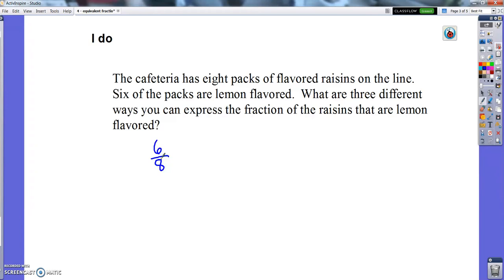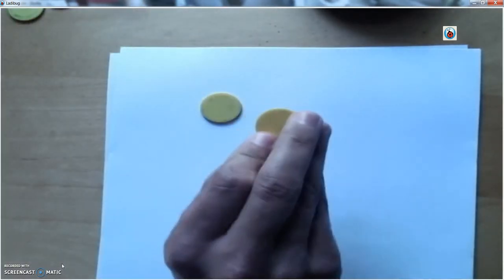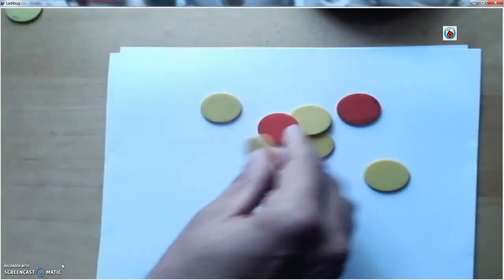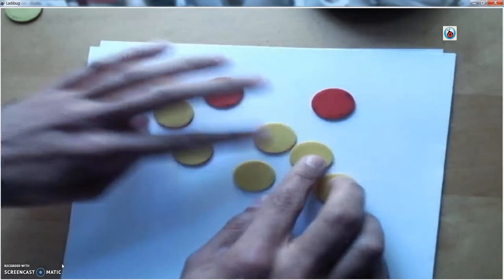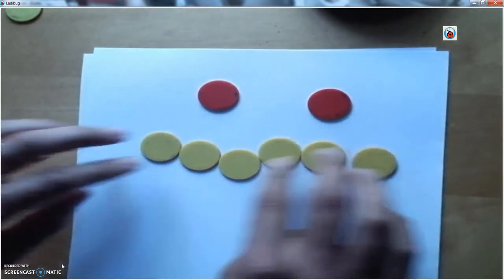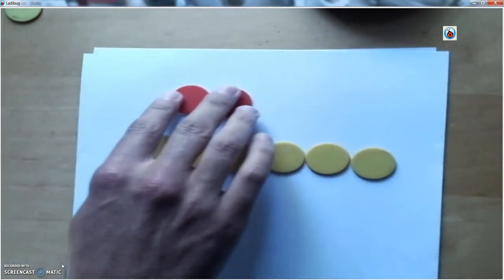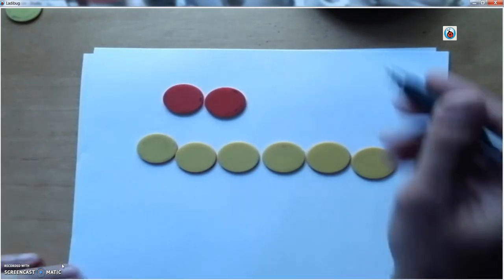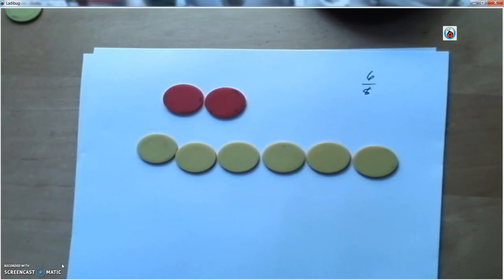Let me show you a way to identify some equivalent fractions. A set model is a strategy where you either draw or use physical things to show the fraction. I got these two-sided red and yellow pieces available in the room. I'm going to put out eight of those: three, four, five, six, seven, eight. So there I represent my eight packs of raisins in the cafeteria. I've got six yellow ones for lemon and the red ones for not lemon. So I've got one, two, three, four, five, six, seven, eight packs of raisins and six of them are lemon. That's how I can easily see my six out of eight, my six eighths fraction.